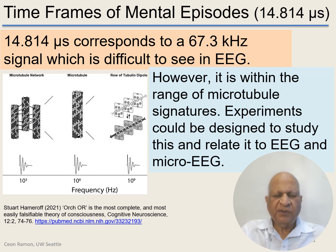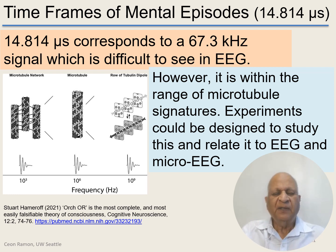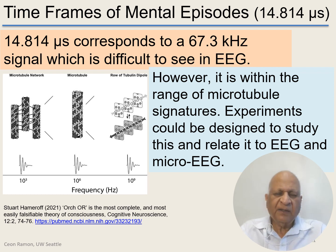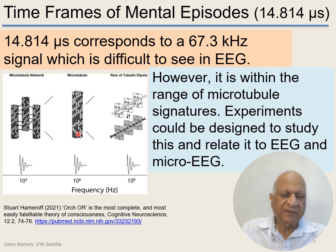The very short timeframe which Buddhist practitioners call mental episodes — about 14.8 microseconds — is very difficult to see in EEG. However, there may be a possibility to observe them in a well-designed experiment using cell assemblies, single-cell recording, or micro EEG data. This might relate to ORCH-R theories that many people have discussed, with the signature falling somewhere between network-level and a single microtubule. It's a possibility we might see it in the future.